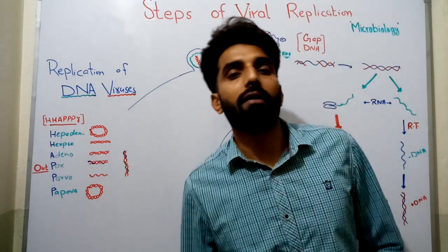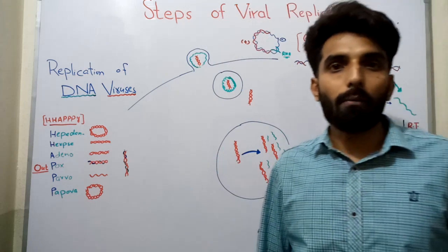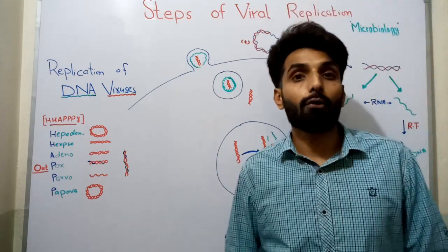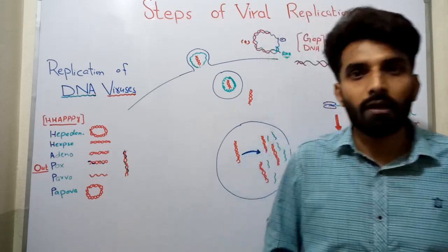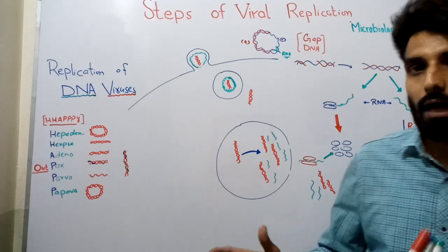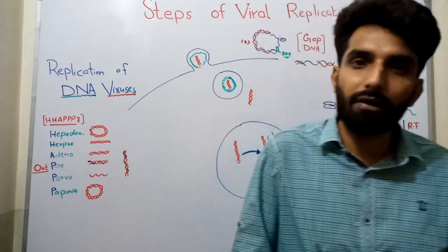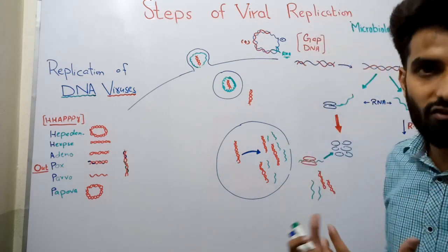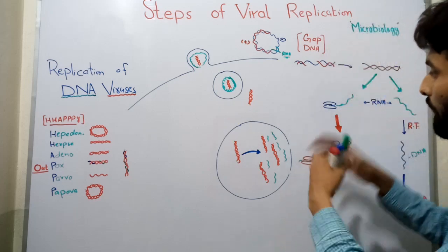Hello friends, my name is Izvan Afiz. We have been talking about viruses — we talked about the steps involved in viral infection, and we also talked about different types of classification like the Baltimore classification, covering DNA viruses, RNA viruses, single-strand DNA viruses, and double-strand DNA viruses. In today's video, we will talk about the replication of DNA viruses.